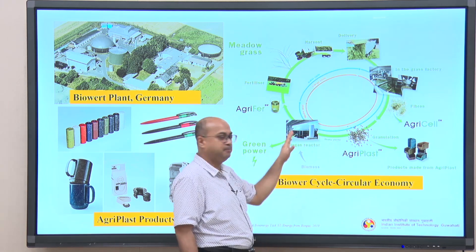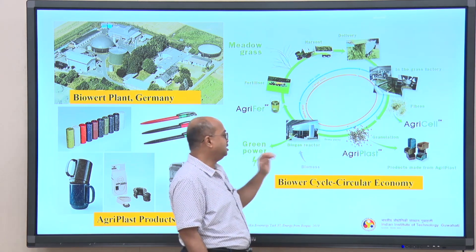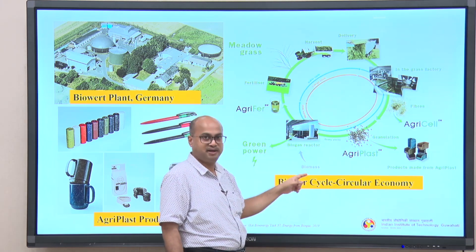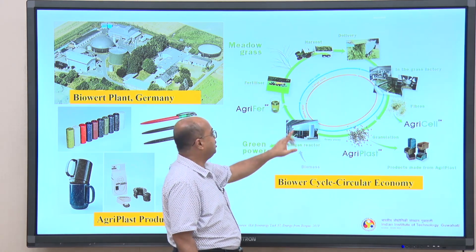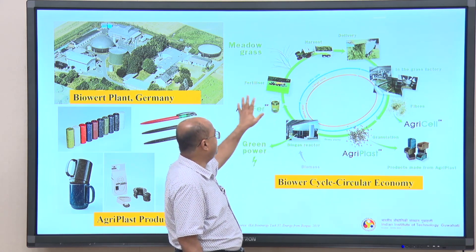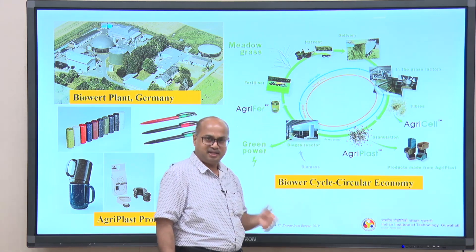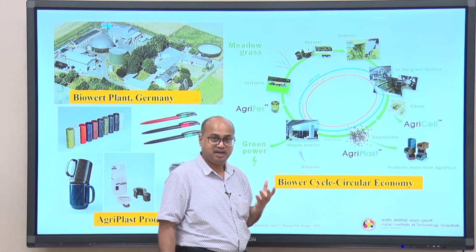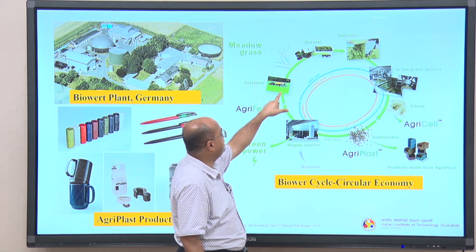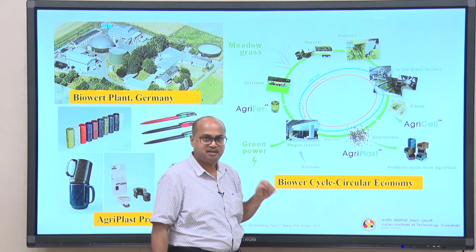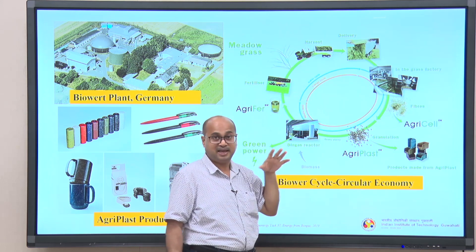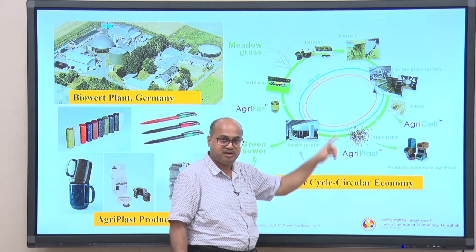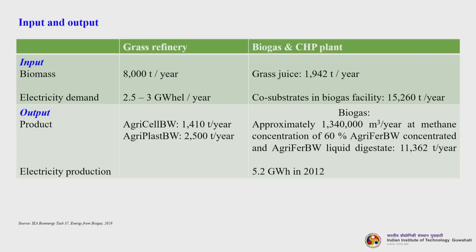The grass slurry goes to the biogas reactor for anaerobic digestion, where other biomass can also be co-fed. Whatever comes out is green power. The remaining digestate is used as agri-fertilizer — concentrated into solid fertilizer — and that fertilizer is again used to grow meadow grass, completing the nutrient cycle. Thereby a complete nutrient recycle is achieved, embodying the circular economic concept.